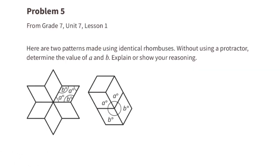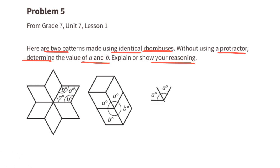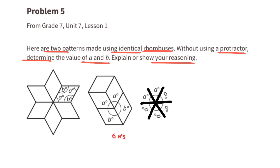Problem number 5 from 7th grade unit 7 lesson 1: here are two patterns made using identical rhombuses. Without using a protractor, determine the value of A and B. First, count how many angle A's fit in a full circle — six angle A's fit in 360 degrees. So 360 divided by 6 means each angle A is 60 degrees.